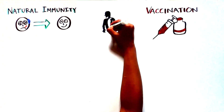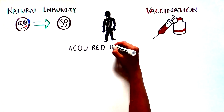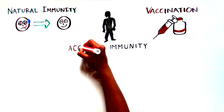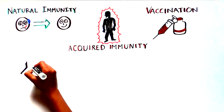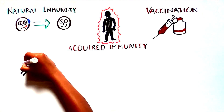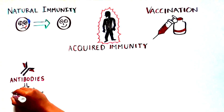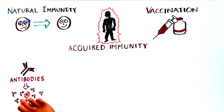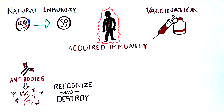In both cases, our bodies generate a type of immunity called acquired immunity, which is like a protective shield for our bodies against outside invaders — similar to a moat around a castle. Acquired immunity can give us long-lasting immune protection through antibodies, proteins that help our immune systems recognize and destroy pathogens.